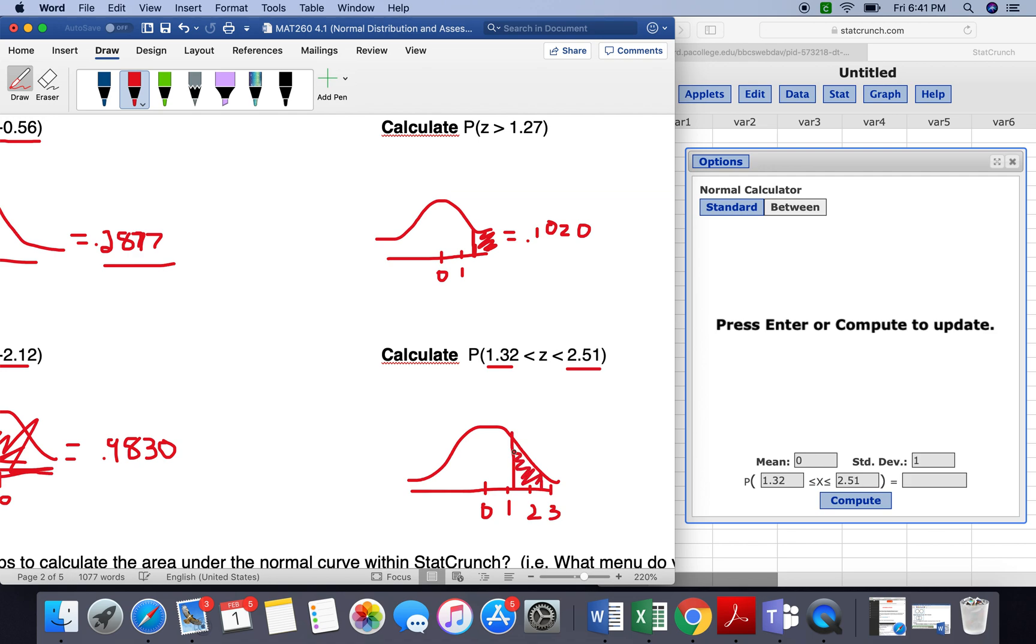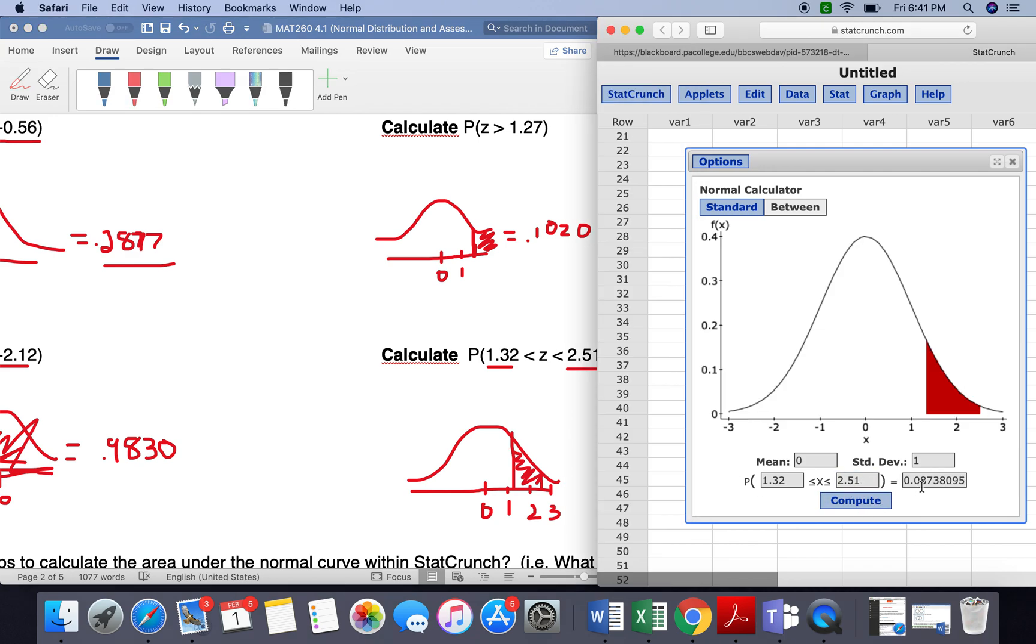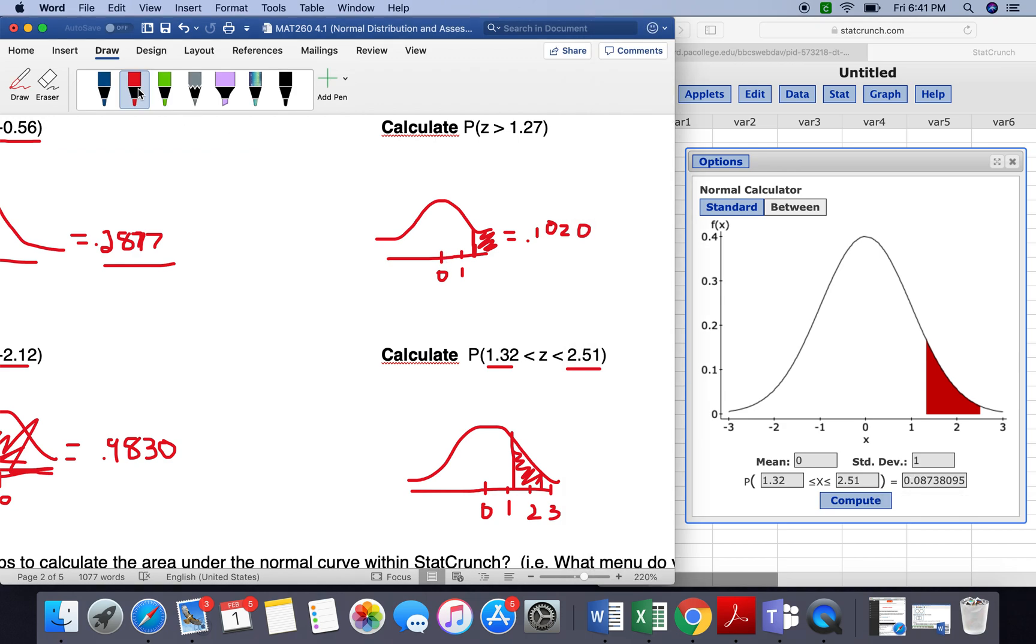So this section here, which is also not that large, so we're going to compute. And this gives us 0.0873, which makes sense because we only have a small section of the curve here. So 0.0873.